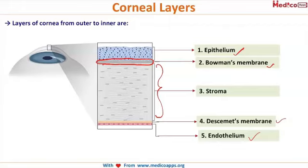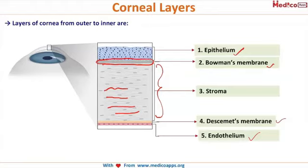The structural arrangement of fibers in the stroma, as you can see, are arranged parallel to each other. Because they are arranged parallel to each other, they do not interfere with the wavelength of light entering into the eye, and hence there is no disturbance in your vision, allowing you to have clear vision.